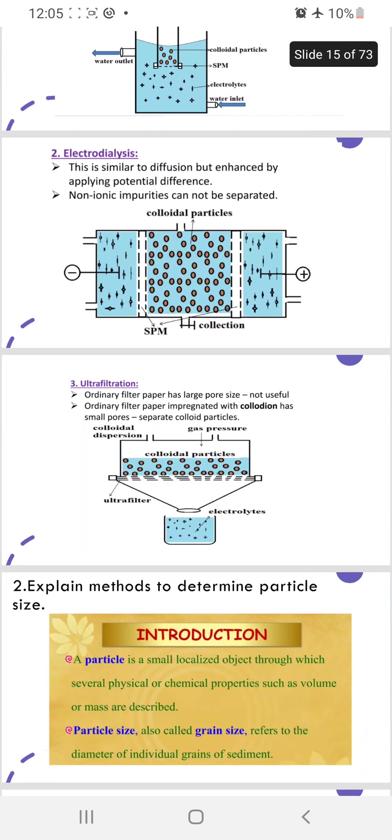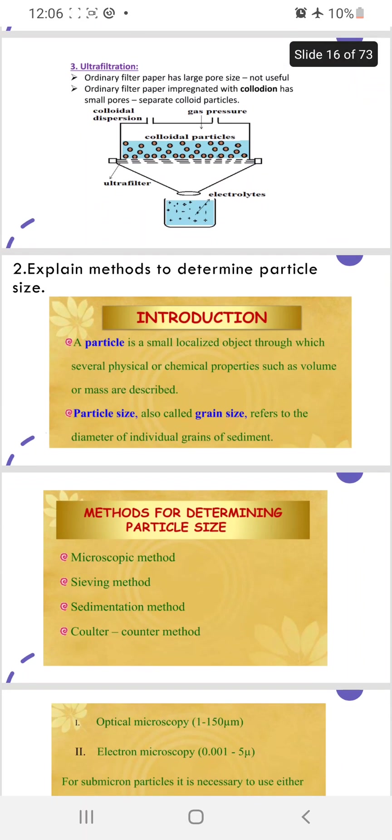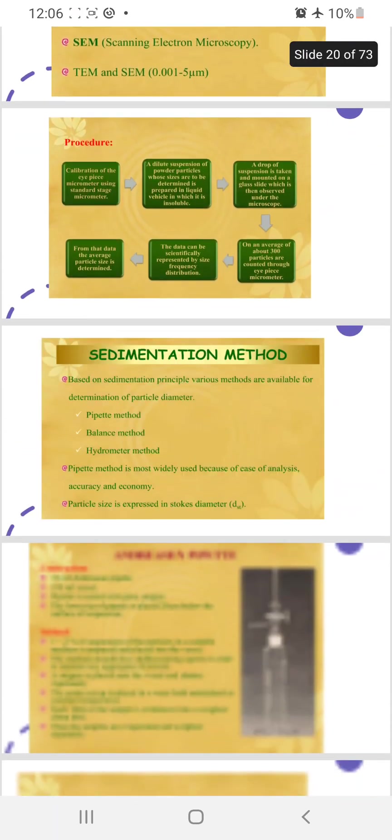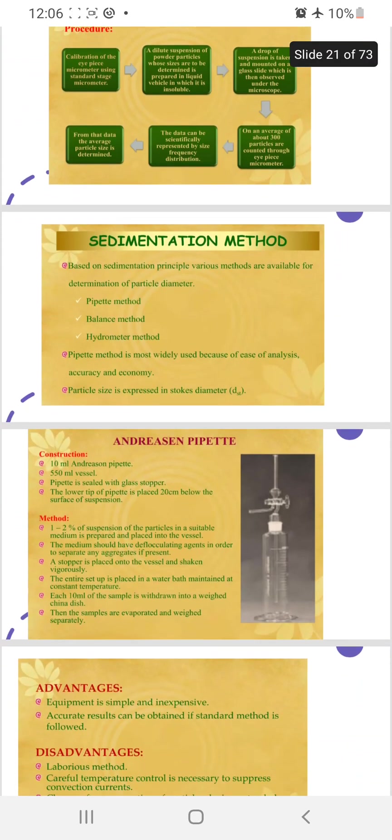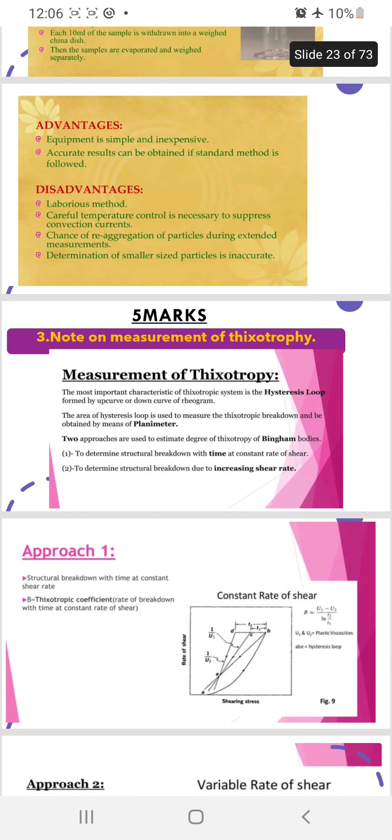Second question: methods to determine the particle size. Different methods are there. First you have to write what is particle size, then write the methods. After writing the methods you can explain any one or two. I have taken here Anderson pipette method, as it's asked many times in the examination.